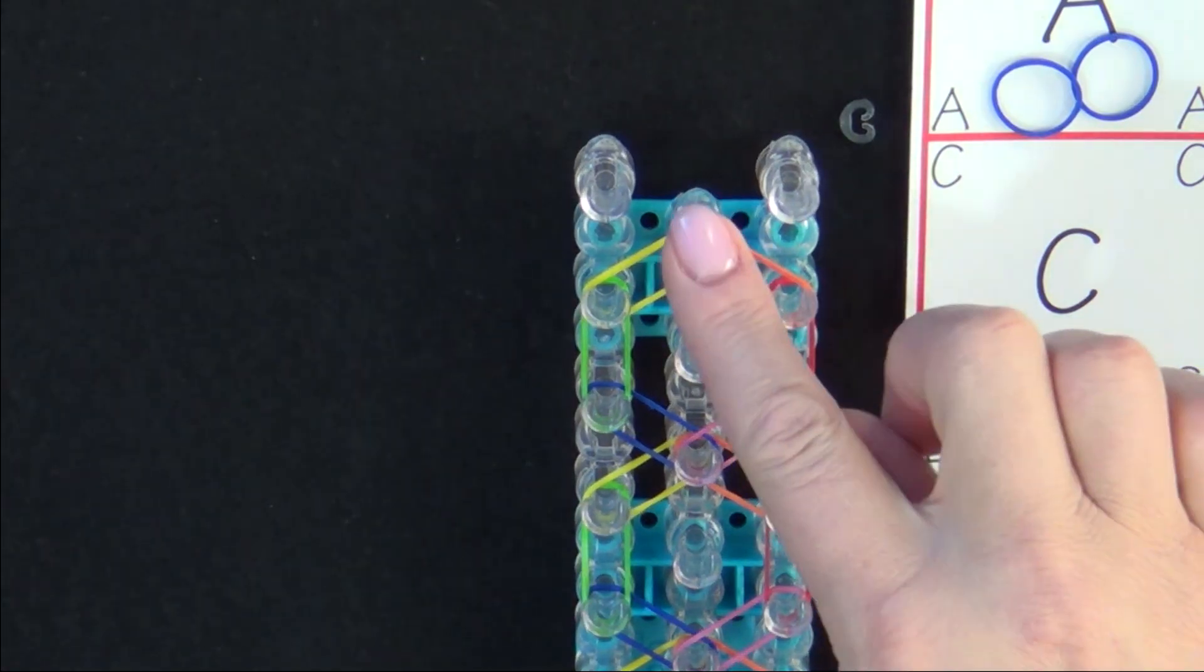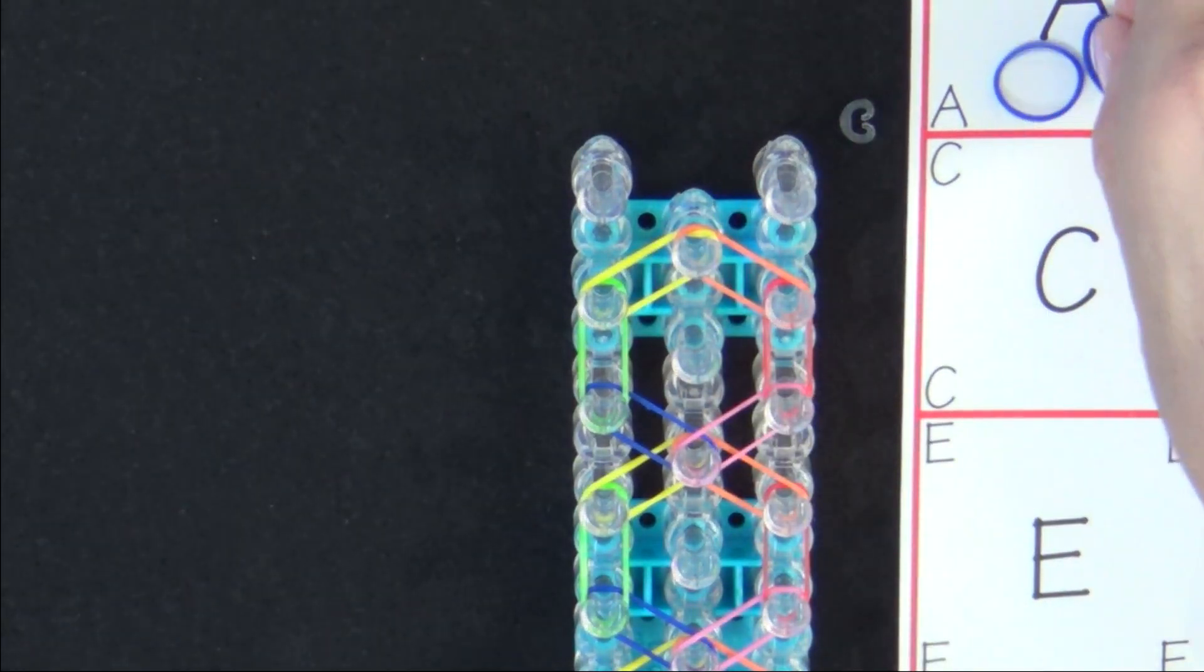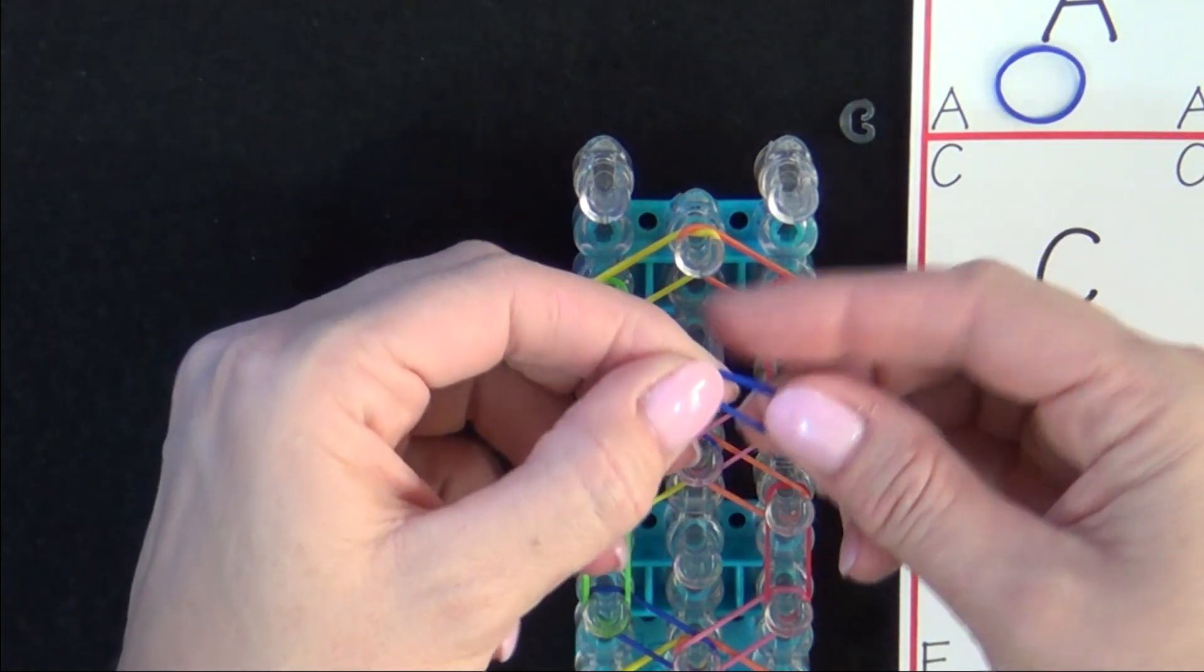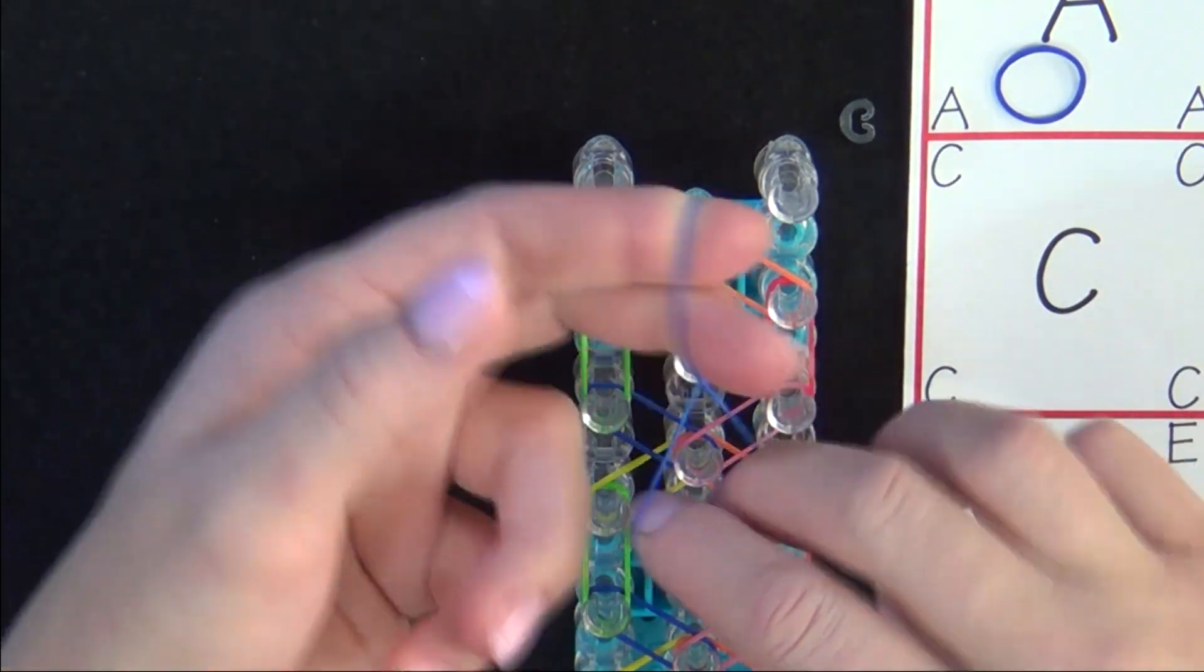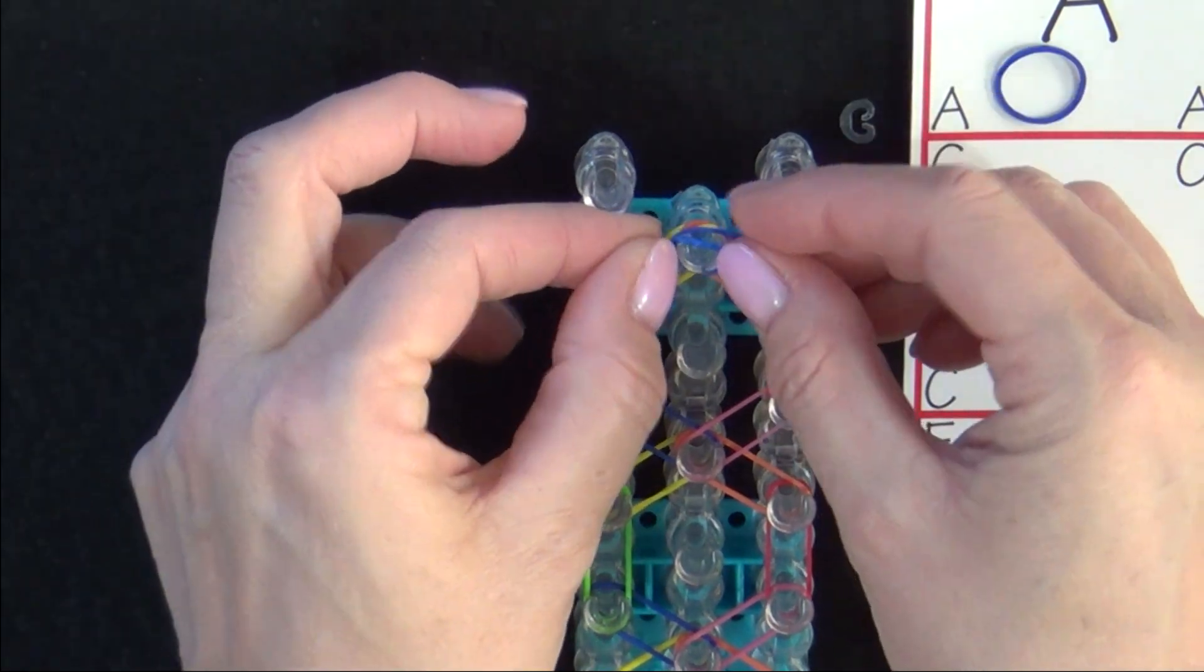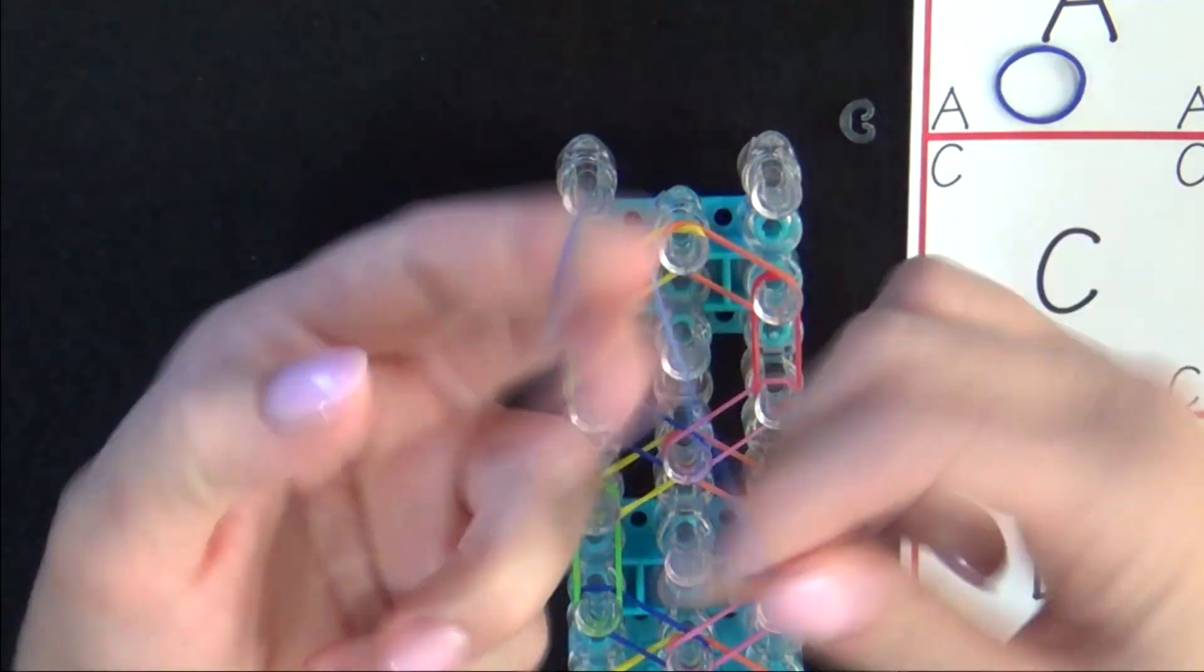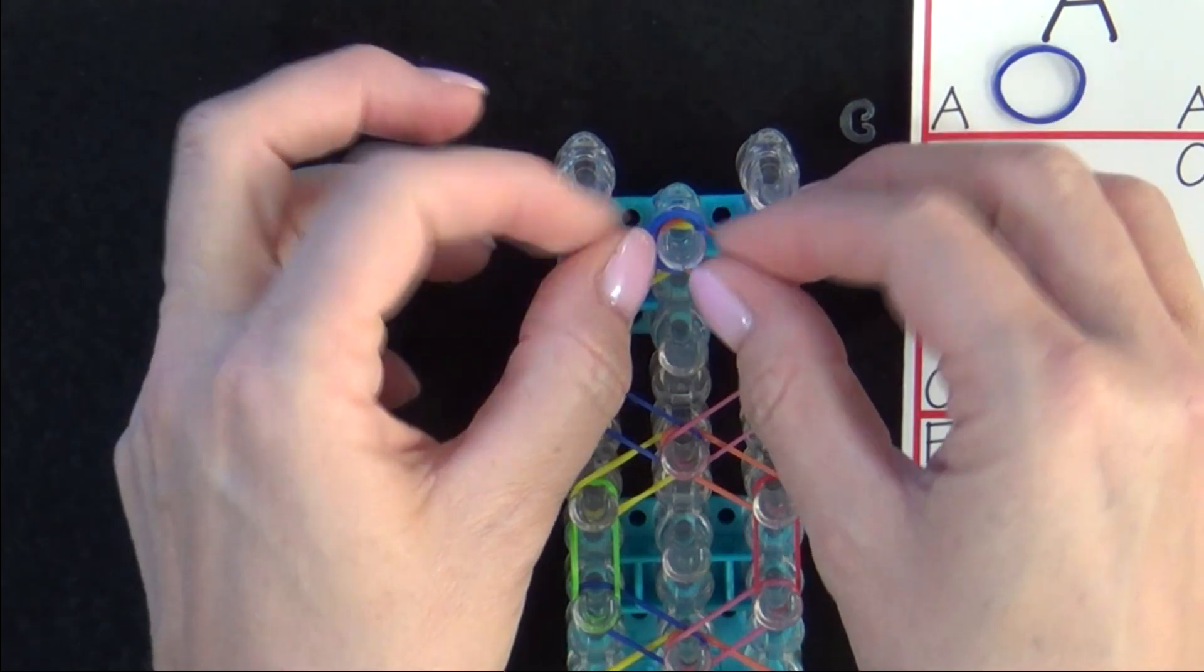Once you've reached the end of the loom, place an A colored cap band on that last pin. You'll grab an A colored band, put 2 fingers in each side, twist it into the figure 8, then loop it back upon itself and place it on that last pin.